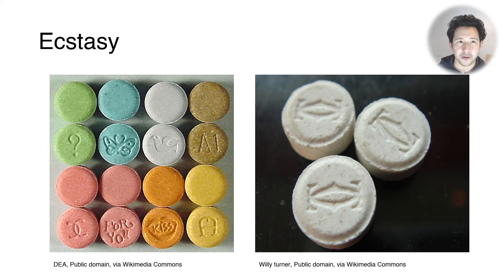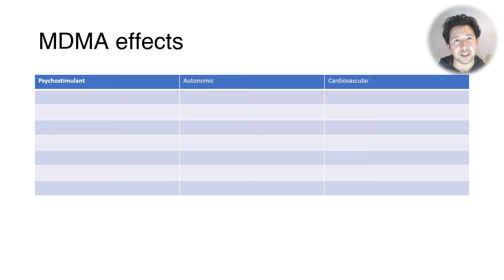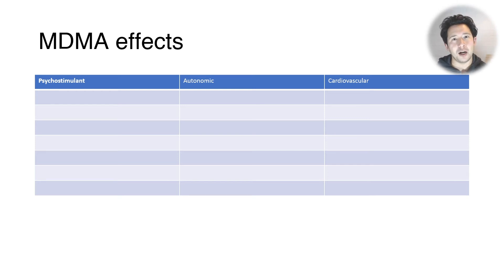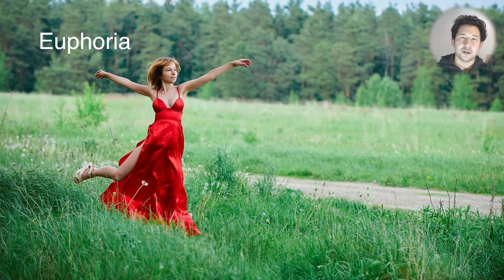We're going to talk about three categories of effects of MDMA. The first is psychostimulant effects — these are mainly the ones that people want when they're taking the drug. The next ones are autonomic and cardiovascular effects, which people would generally consider side effects — they're not really beneficial or enjoyable.